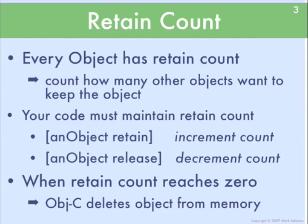In Objective-C on the iPhone, all memory management is done using retain counts. Every object in Objective-C is derived from the base class NSObject. An NSObject has a property which is the retain count. The retain count is a count of how many other objects want to keep this object around, or another way of looking at it is it's just a count of how many other objects have a reference to this object. You have to write the code that maintains the correct retain count, and you do that with two methods which are inherited from NSObject: retain and release.